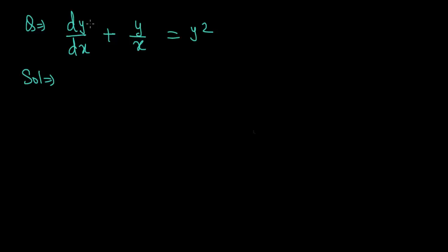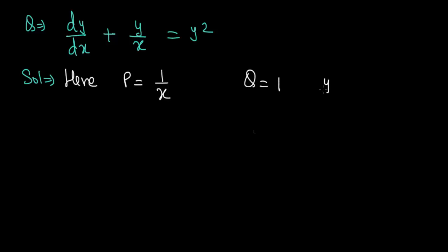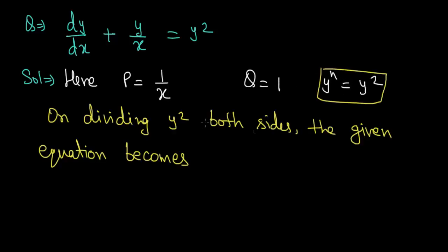Consider the equation dy/dx + y/x = y². Comparing with the standard Bernoulli form, we get P = 1/x (coefficient of y) and Q = 1, and n = 2. To remove the y² term, we divide both sides by y².